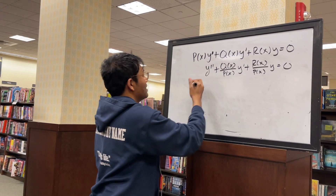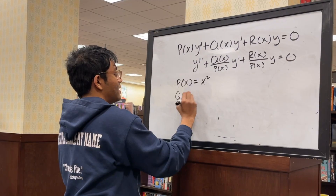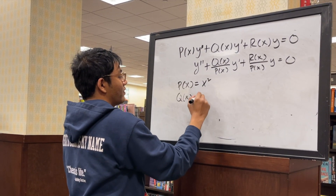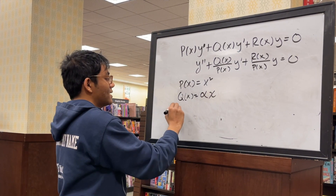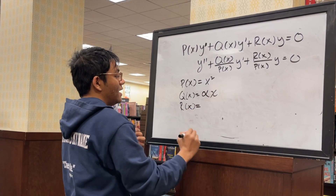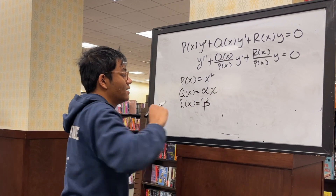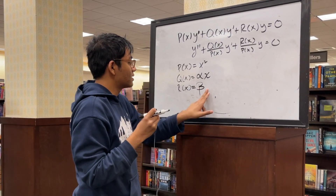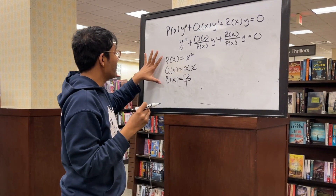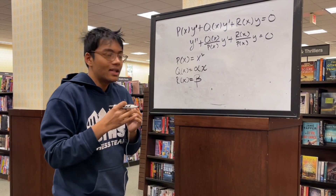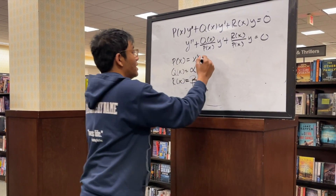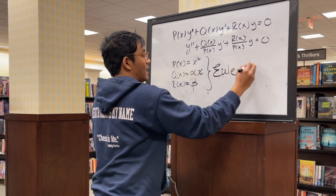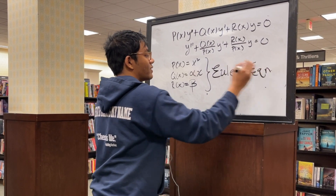Now, what happens if p(x) equals alpha x — a constant times x — and r(x) equals beta, just a constant with no variables? If you have this kind of form of a second order ODE, then you have something called an Euler equation, and that's what we're going to explore how to solve today.